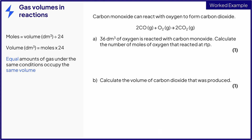This question is about a reaction involving gases. The first part of the question asks you to calculate the number of moles of oxygen, and you were given the volume of oxygen in decimetres cubed that reacted. You were also told that the reaction occurs at RTP, so you know that the equation you should use is this. Substitute the values in to obtain the number of moles of oxygen.